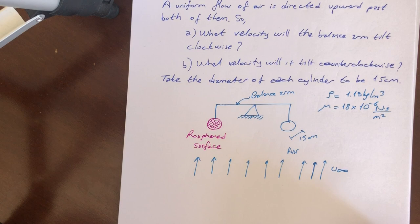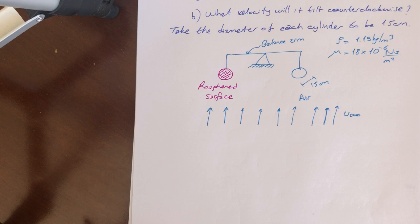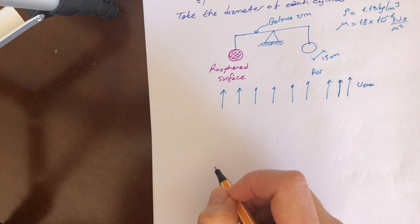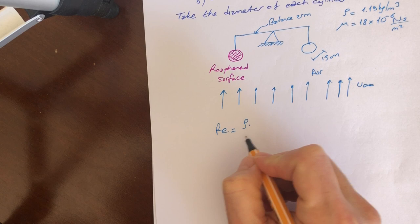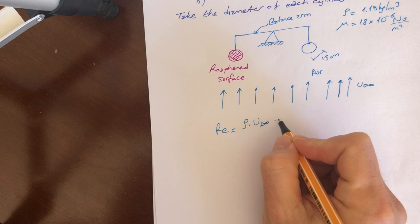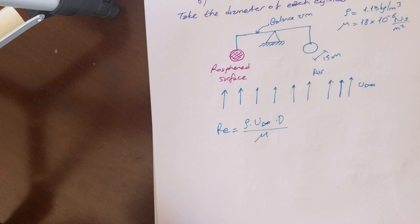Firstly, for this kind of question, both internal flow or external flow, we must calculate the Reynolds number if it is possible. Let's write the equation of Reynolds number. We can write the Reynolds number re equal to rho multiplied by u infinity times d over mu, dynamic viscosity.